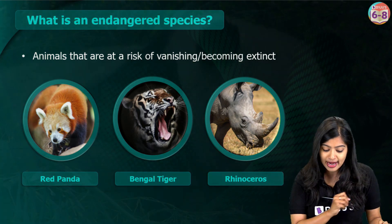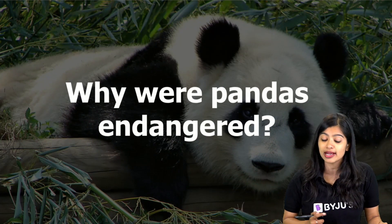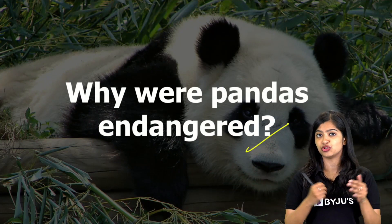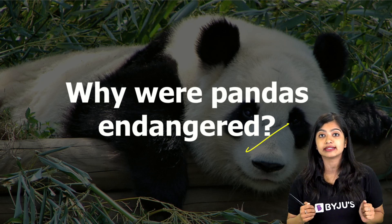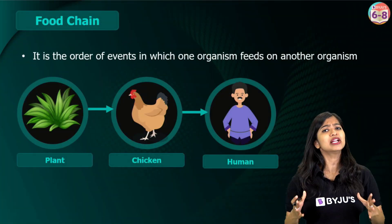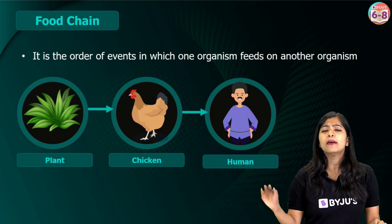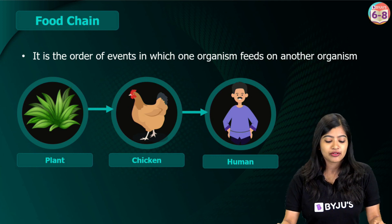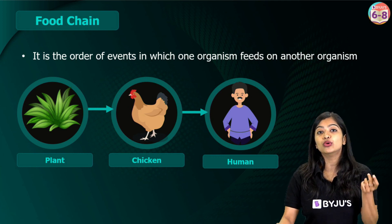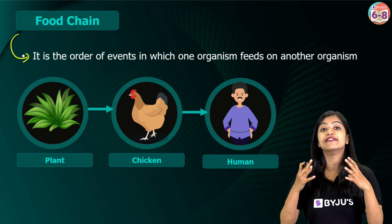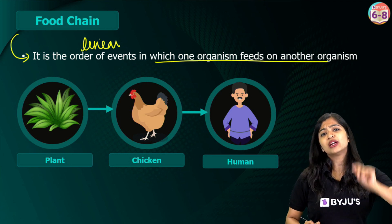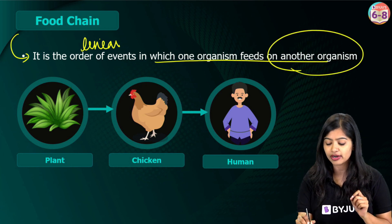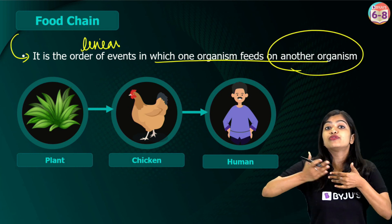But how is all this related to the question 'what if food did not come from plants'? Well, for that we must find out the reason why pandas were once considered to be endangered. To understand this concept we need a good understanding of what a food chain is. A food chain is a linear, straight order of events wherein one organism feeds on another organism.